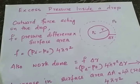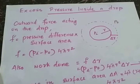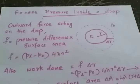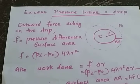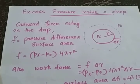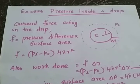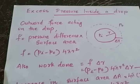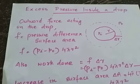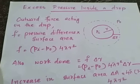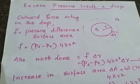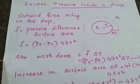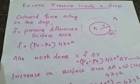That is we need to find out an expression for excess pressure inside a drop. So what do you mean by a drop? And why do liquids always tend to assume a spherical drop? That means why the shape of a drop is spherical. It is due to surface tension. The molecules near the surface of the drop experience a resultant pull inwards due to surface tension. So because of this inward pull,